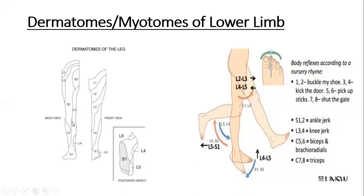This is the posterior view of the lower limb. This aspect is the medial aspect and this one is the lateral aspect. From above downwards, the segmental innervation is by L2 and L3 in the middle, up till the upper middle of the back of the leg, which is by S2. On the middle third of the thigh medially, up till the upper medial aspect of the leg, is supplied by L3.